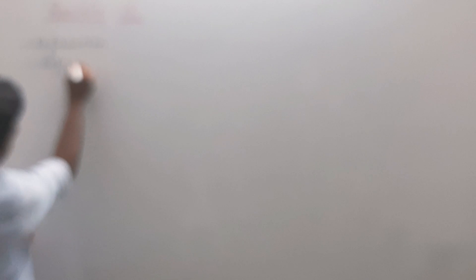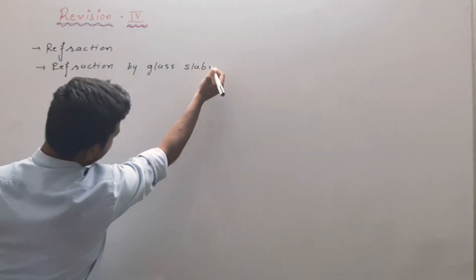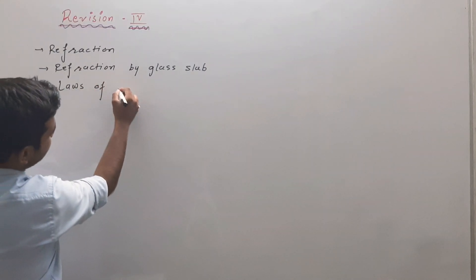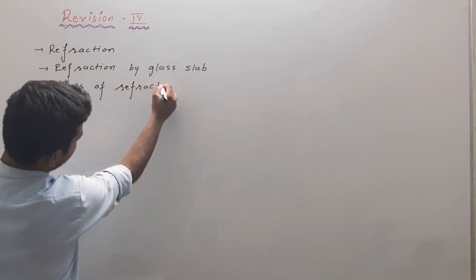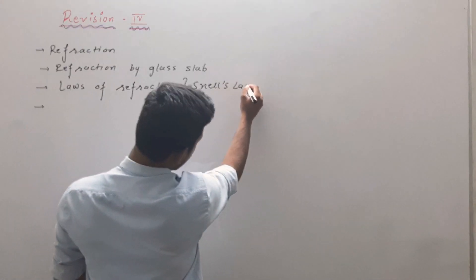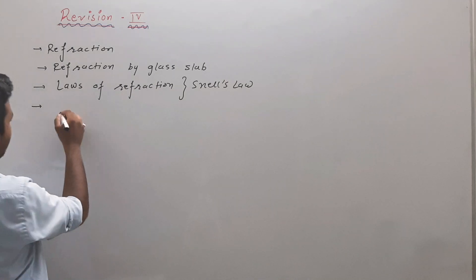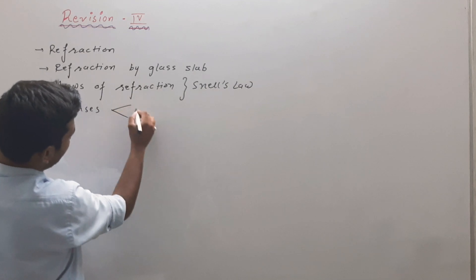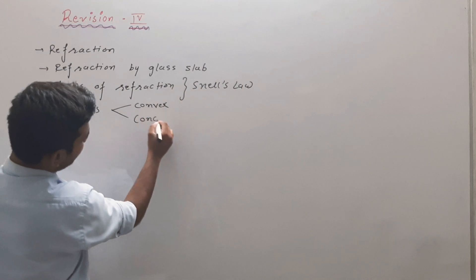Here we are going to discuss what is called Refraction, what is the definition of Refraction. We will also discuss how Refraction by glass slab is done. From this we will also discuss the Laws of Refraction. After that we will discuss different types of lenses — Convex lens and Concave lens.